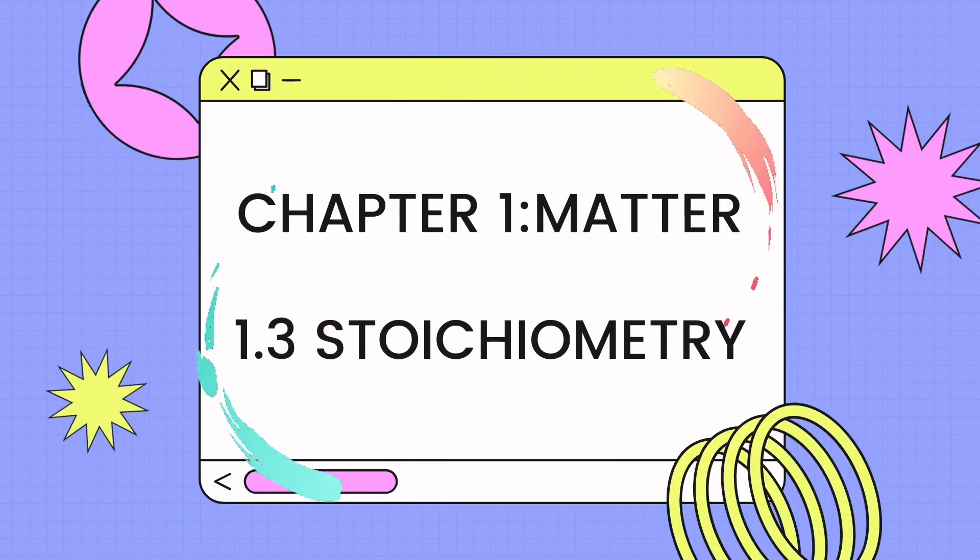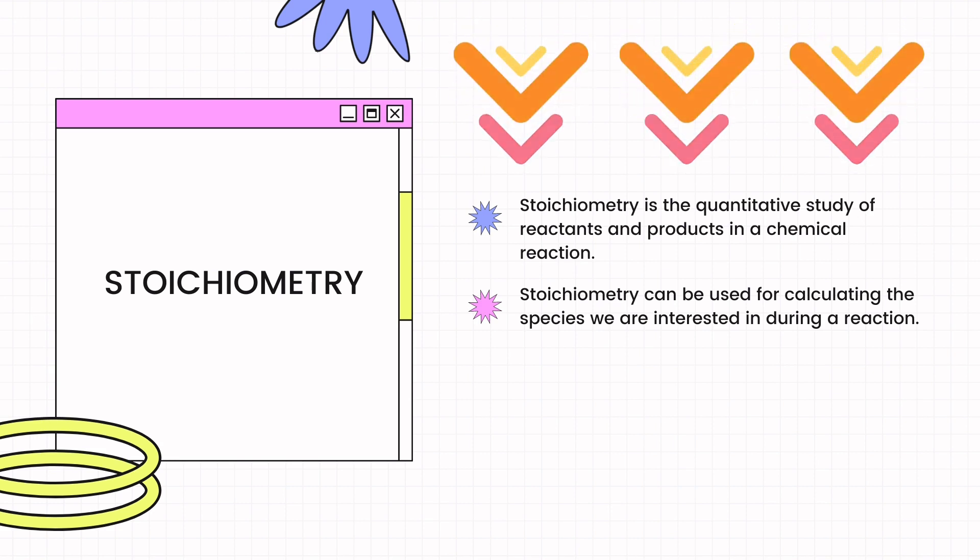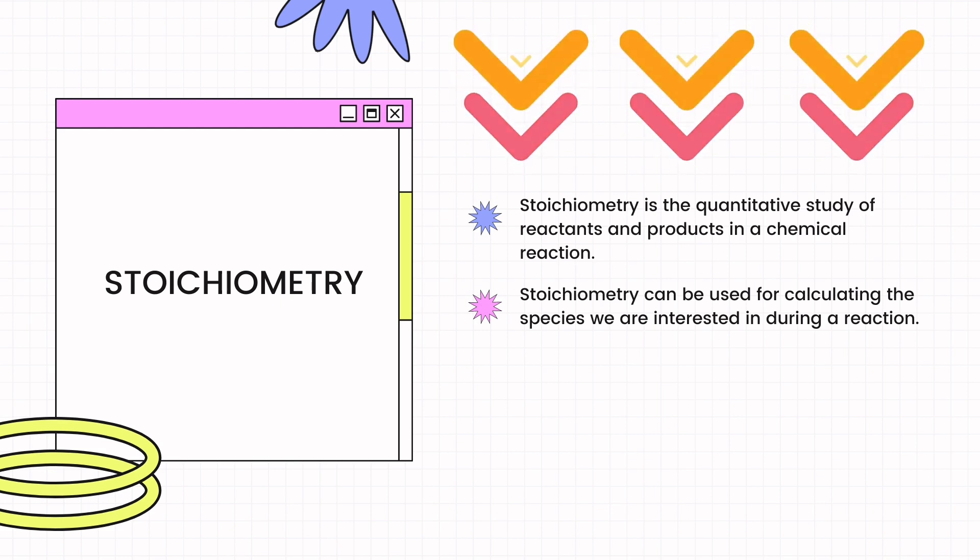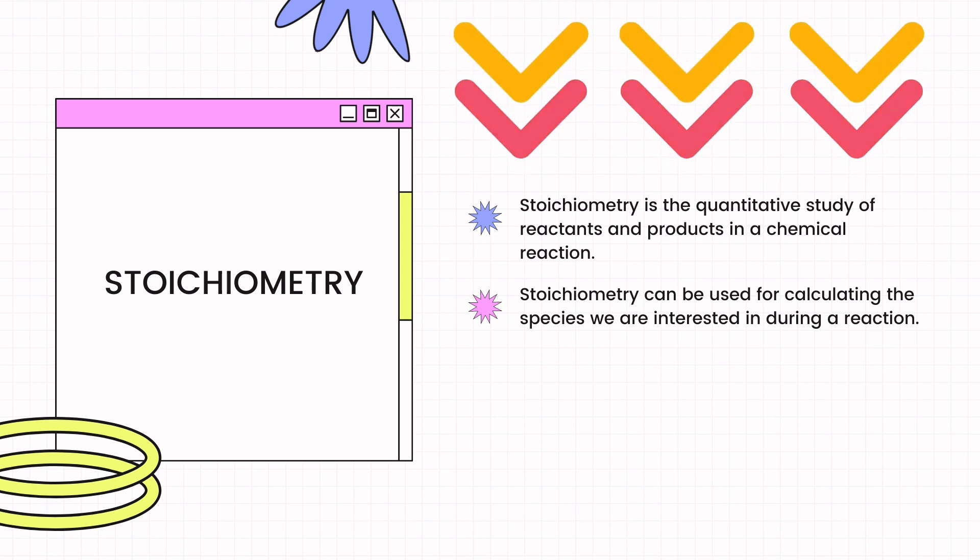Meta Stoichiometry. Stoichiometry is a quantitative study of reactants and products in a chemical reaction. Stoichiometry can be used for calculating the species we are interested in during a reaction.